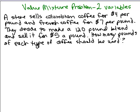We're going to solve this value mixture problem using two variables. I also have a video showing how to solve it using one variable. A store sells Colombian coffee for $4 per pound and French coffee for $7 per pound. They decide to make a 120 pound blend and sell it for $5 a pound. How many pounds of each type of coffee should be used?